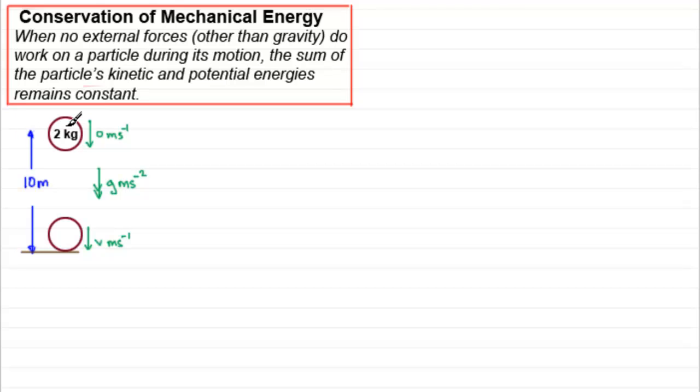Then I can take two points in this motion, let's say this point up here which we'll call A, and this level down here on the ground which we'll call B. So what the principle of conservation of mechanical energy is saying is that the gravitational potential energy at A plus the kinetic energy at A equals the gravitational potential energy at B plus the kinetic energy at B.